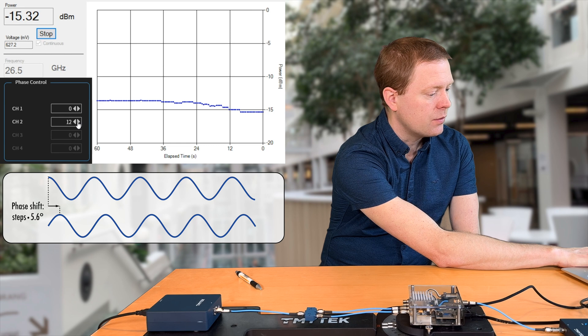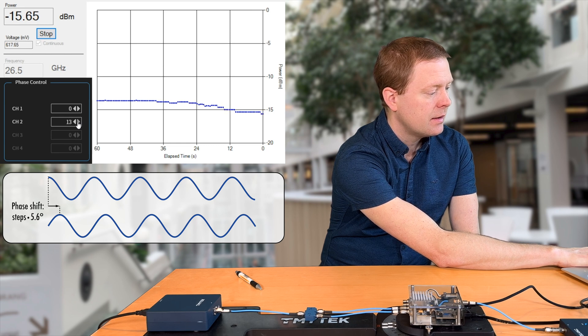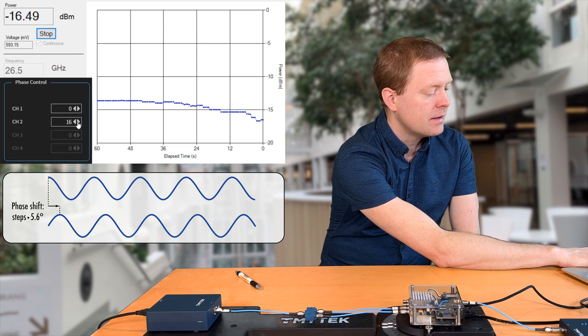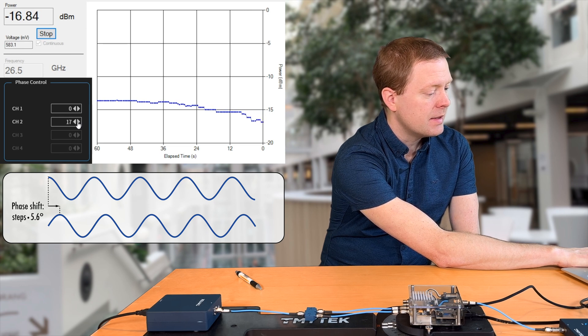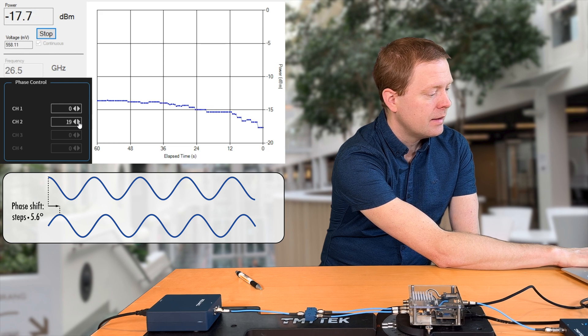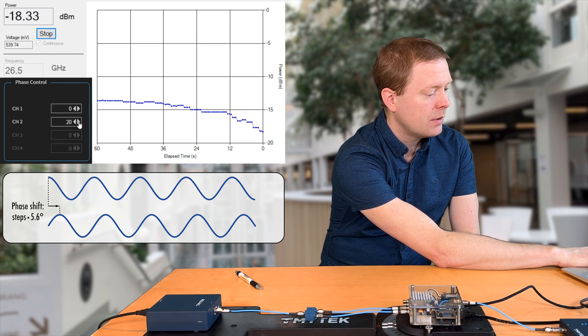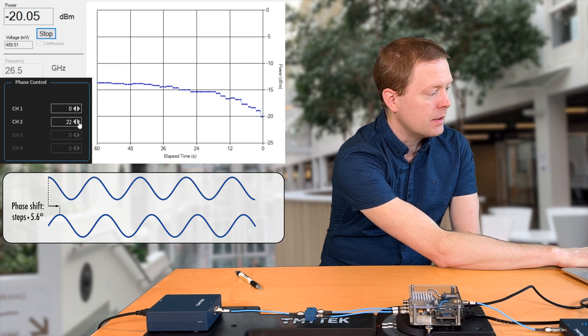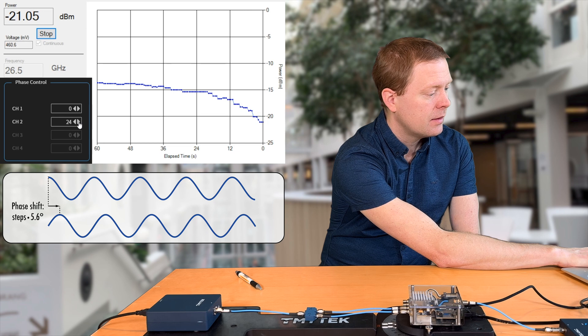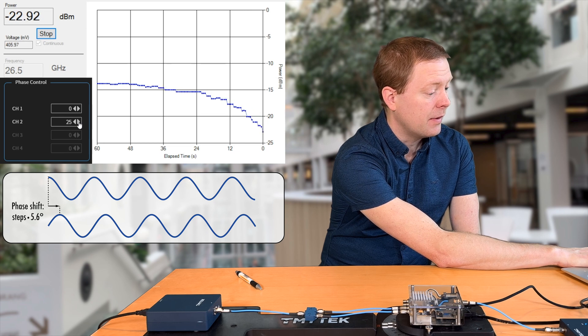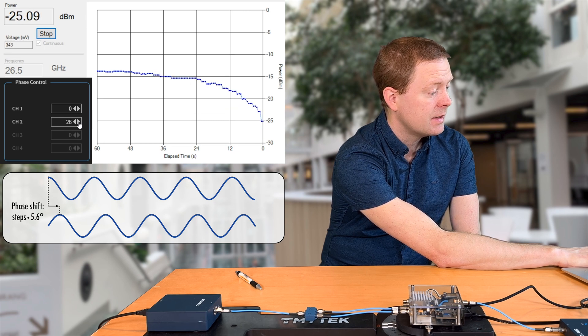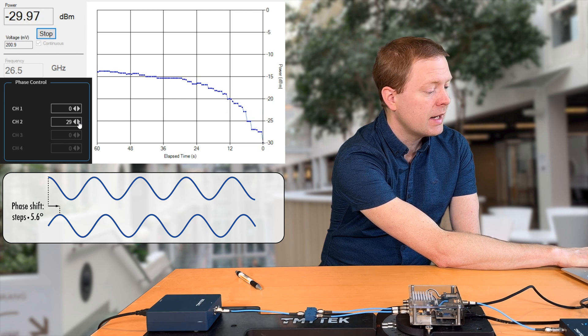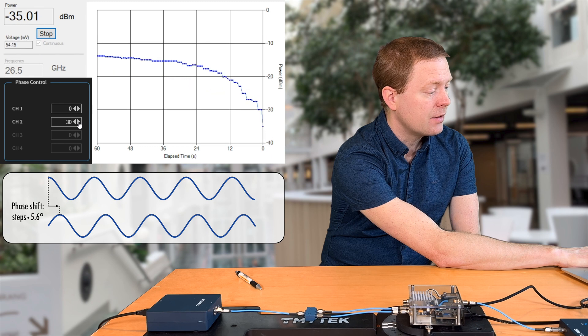So we have 12, 13, 14, 15, 16, 17, 18, 19, 20, 21, 22, 23, 24, 25, 26. See how it starts to really dropping quickly now. This is when we are approaching the point where they will cancel out each other the most.